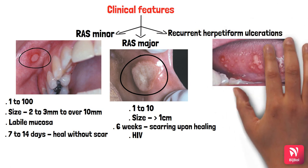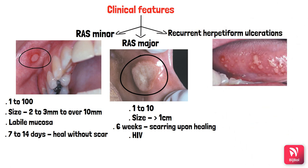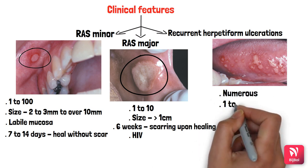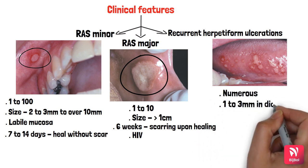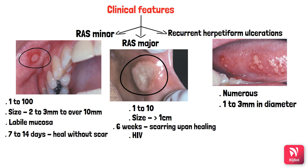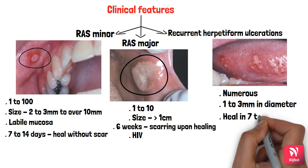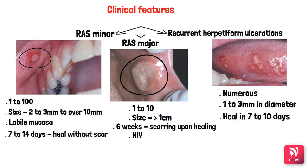Herpetiform ulcers appear as multiple small crops — often up to 100 — in one area, such as the lateral border of the tongue. Each lesion is around 1 to 3 mm in diameter, can occur anywhere within the oral cavity, and heals within 7 to 10 days.